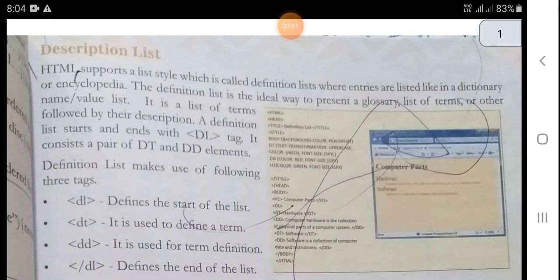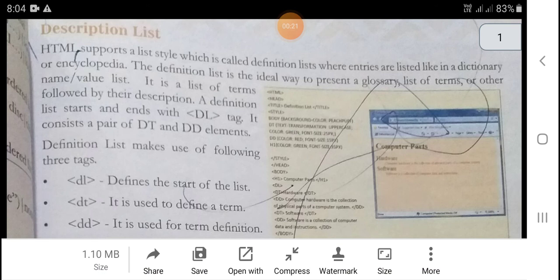Good morning dear students. Today we will start a new topic of this chapter: the description list. HTML supports a list style called the definition list, where entries are listed like in a dictionary. The definition list is the ideal way to present a glossary list of terms or other name-value lists. It is a list of terms followed by their description.